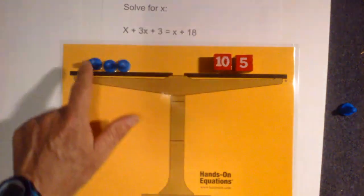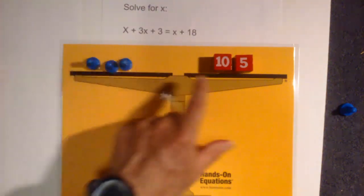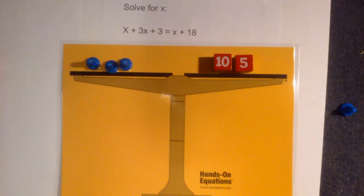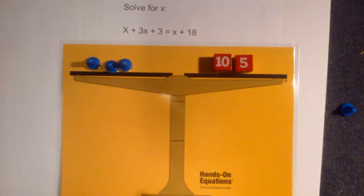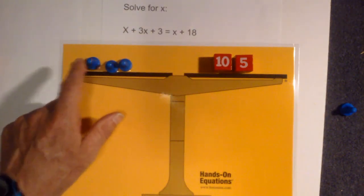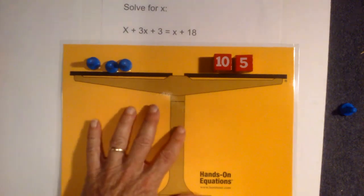So now I have 3 pawns or 3x's equal 15. What I need to do is find 3 pawns that have the value of 15, and I know 3 times 5 equals 15. So the answer is 5.